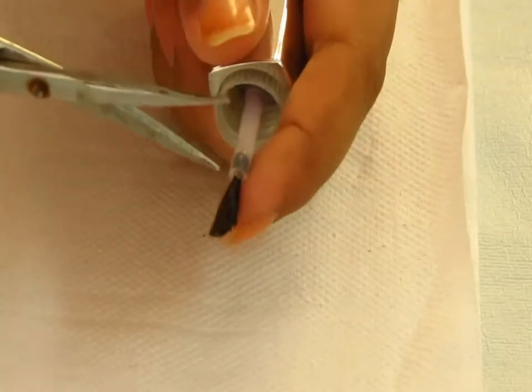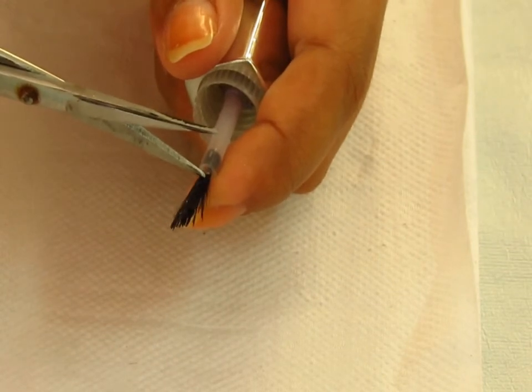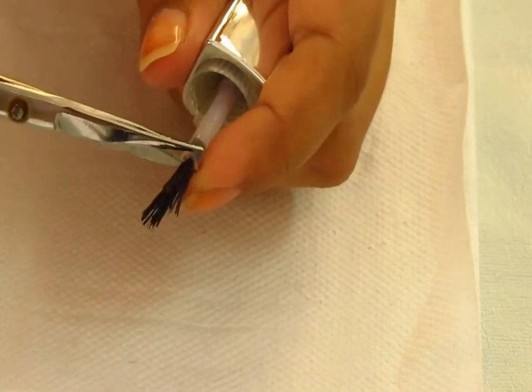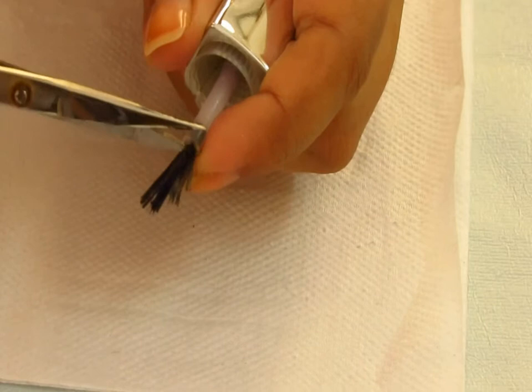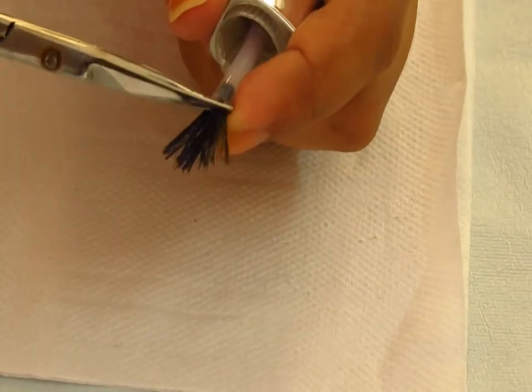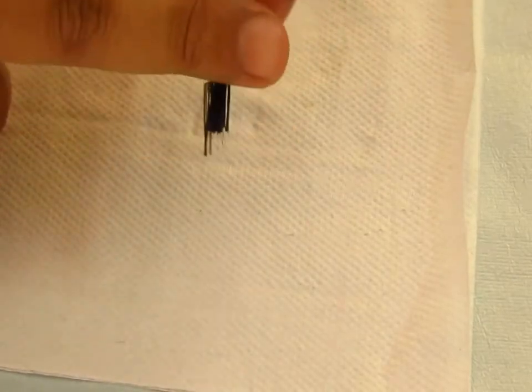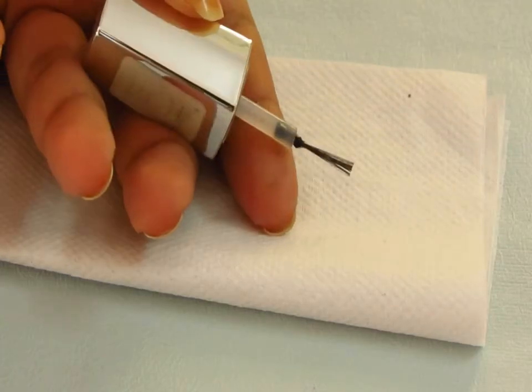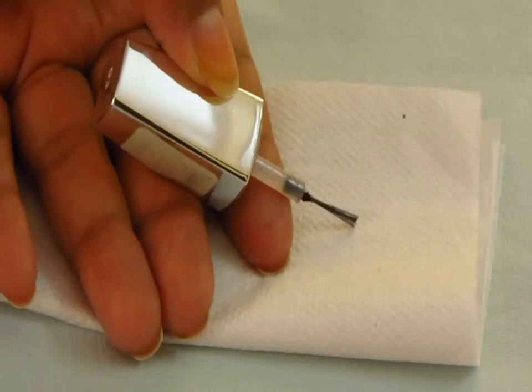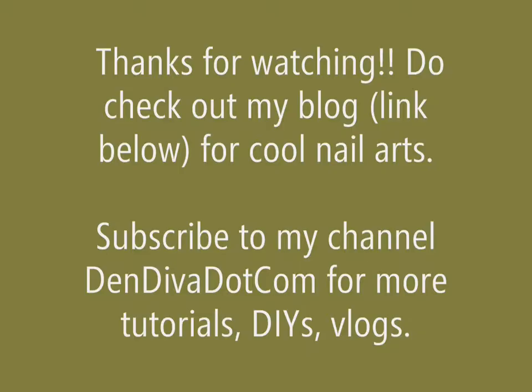show you how to make a striper using an old nail polish applicator brush. Just remove a few strands till you get the desired thickness. Do it carefully, do not remove more. You can see the final result. So thanks